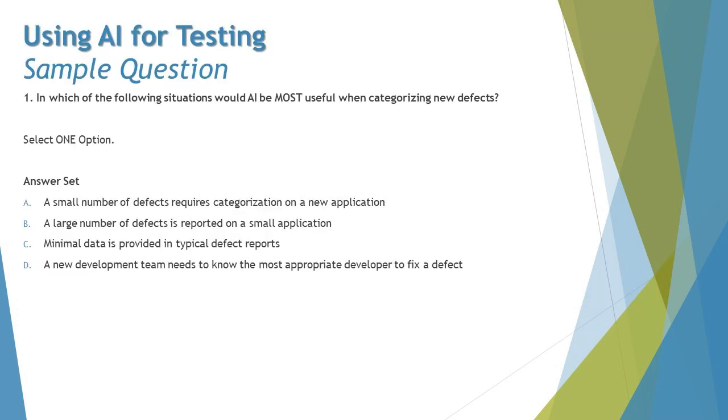The very first question coming up right in front of you is: In which of the following situations would AI be most useful when categorizing new defects? This chapter was more about determination of how AI can be used in testing, and these questions are very to the point and appropriate enough to tell you how AI could be seen as one of the helpful elements to minimize the effort of a tester while testing the system.